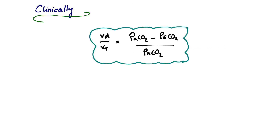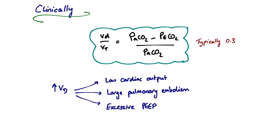Applying this clinically: the Bohr equation gives a ratio of dead space volume to tidal volume, with typical values around 0.3 — about a third of tidal volume is physiological dead space. In situations with pathologically raised dead space, such as low cardiac output states, large pulmonary emboli, or excessive PEEP, you will see a significant increase in this ratio. In an ICU patient with invasive arterial monitoring and end-tidal capnography, you will see a large difference between the measured arterial CO2 — perhaps showing hypercapnia at six or seven kilopascals — and relatively modest end-tidal CO2 on the capnography. That is the Bohr equation in action, demonstrating that this ratio has increased.